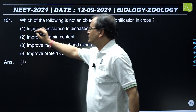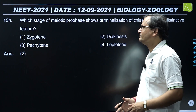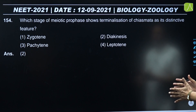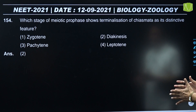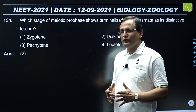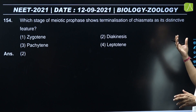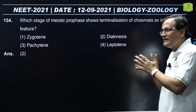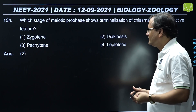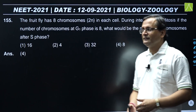Question 154: Which stage of meiotic prophase shows terminalization of chiasmata as its distinctive feature? Chiasmata are formed during the diplotene stage, but the terminalization of chiasmata - moving from the central to the peripheral part - occurs during the dikinesis phase. So the correct answer is option second.